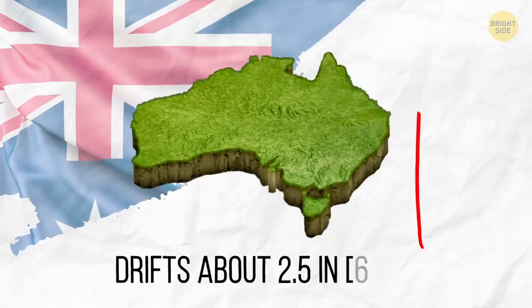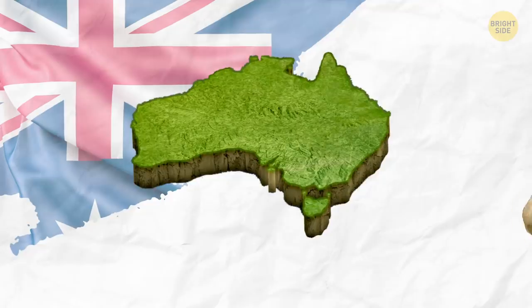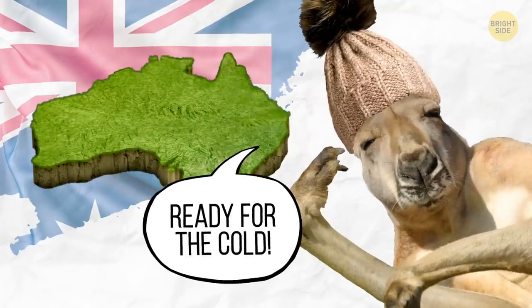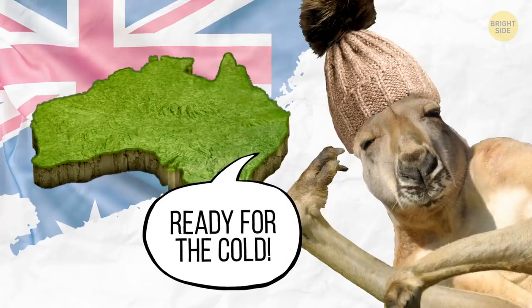Australia drifts about 2.5 inches north each year because of tectonic plate movements. Maybe a few million years or so, and they'll be down upper.